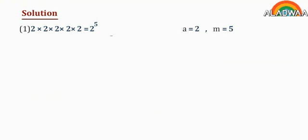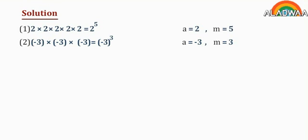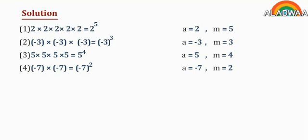Solution: Number 1 equals 2 to the power 5, where a equals 2 and m equals 5. Number 2 equals negative 3 to the power of 3, where a equals negative 3 and m equals 3. Number 3 equals 5 to the power of 4. Number 4 equals negative 7 to the power of 2, where a equals negative 7 and m equals 2.